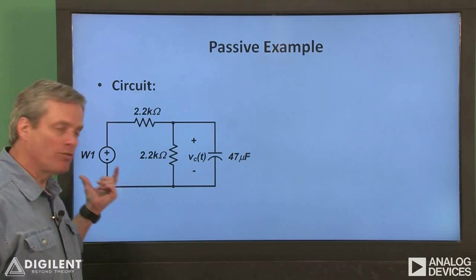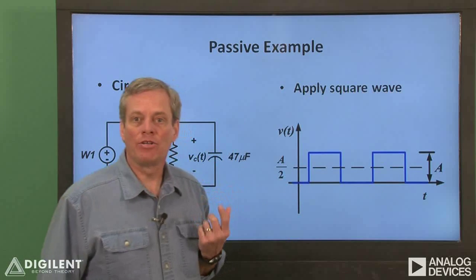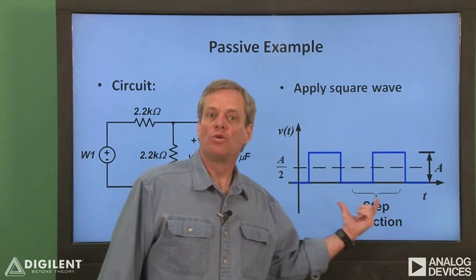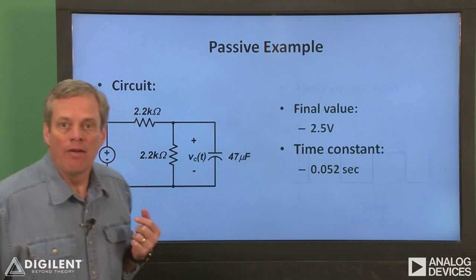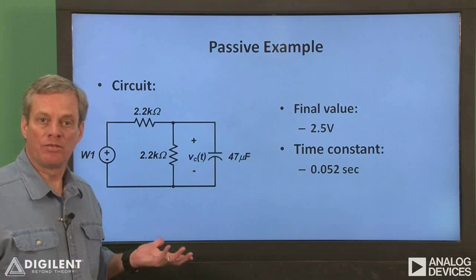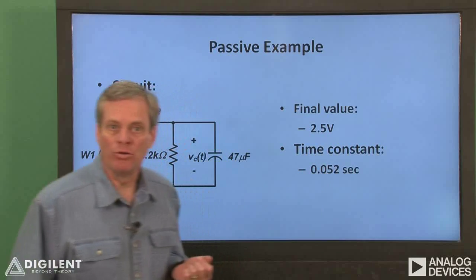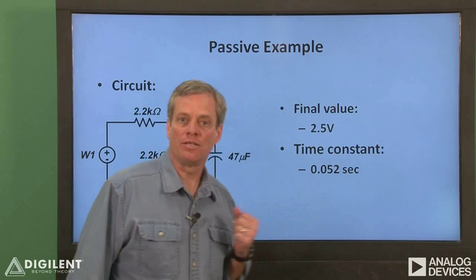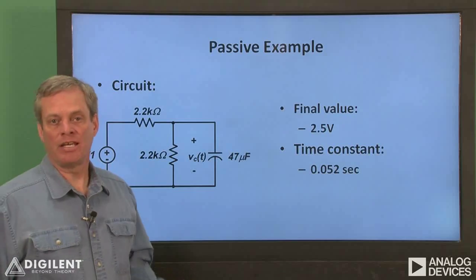We'll still use the waveform generator to apply a square wave to the circuit. However, to create a step response, we'll look at the circuit's response to an increase in voltage from the waveform generator. If we analyze our circuit to the response of a 5 volt step, where the waveform generator voltage increases from 0 to 5 volts, we'll expect the final voltage to be 2.5 volts and the time constant to be about 0.052 seconds.